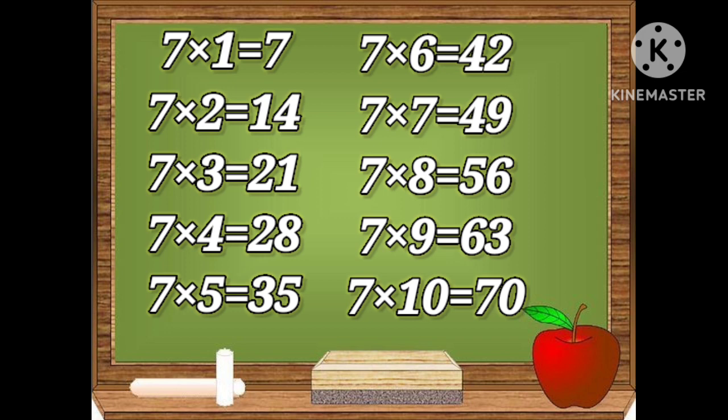Seven ones are seven, seven twos are fourteen, seven threes are twenty-one, seven fours are twenty-eight, seven fives are thirty-five, seven sixes are forty-two.